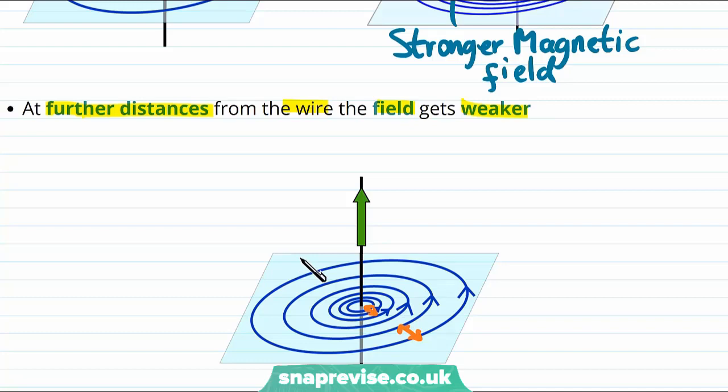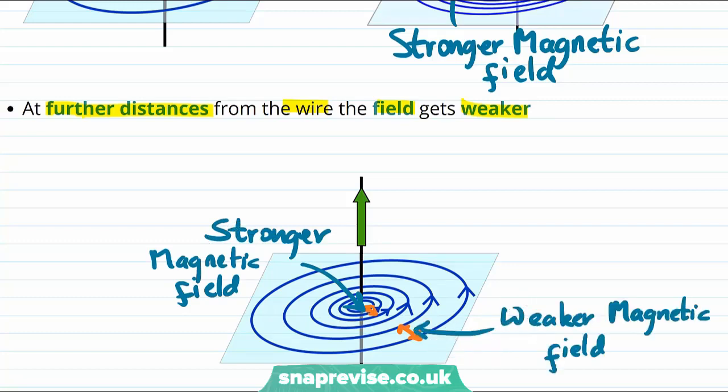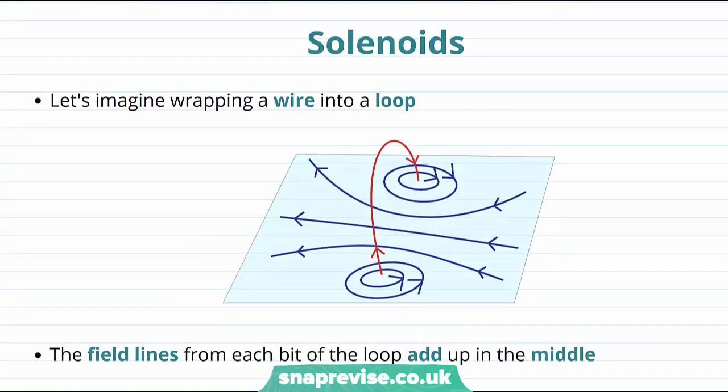So therefore the magnetic field near the wire is stronger, and the magnetic field further away from the wire is weaker. And this makes sense because the further away we are from the wire the less of an effect we think it should have on any magnets that we're carrying. We now know what the magnetic field of a straight current carrying wire is.